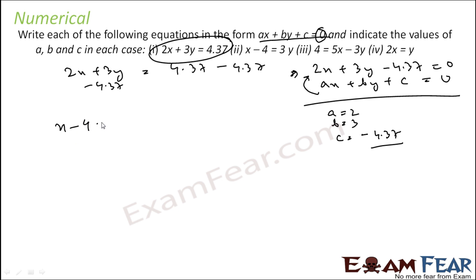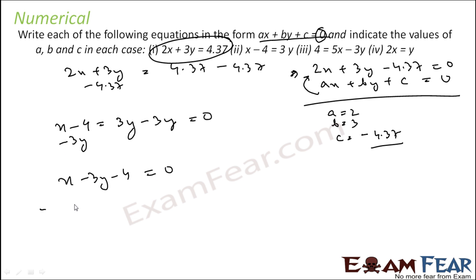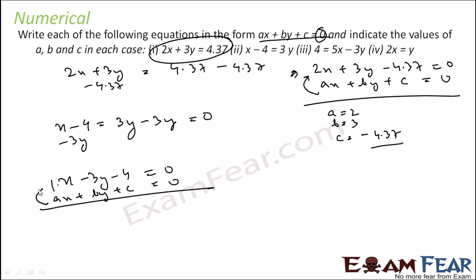For x minus 4 equals 3y, subtract 3y from both sides to get x minus 3y minus 4 equals 0. Comparing with ax plus by plus c equals 0: a equals 1, b equals minus 3, and c equals minus 4.